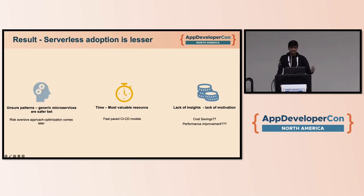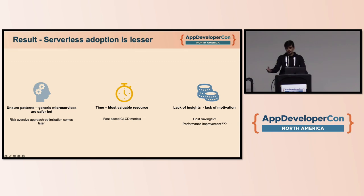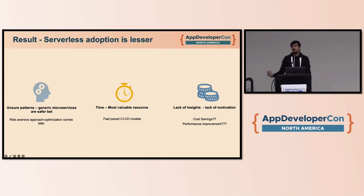Because of this kind of system, it's natural to take a risk-averse approach where applications are first developed in a generic way — like a microservice — and optimizations come later. This is especially significant in CI/CD models where time is the most valuable resource. But once applications are deployed, due to the sheer number of metrics and applications, it's generally very difficult and time-consuming to revamp them. The result is that serverless is not really used very effectively.